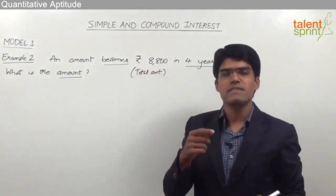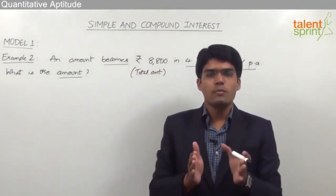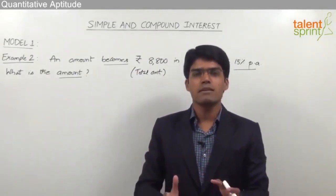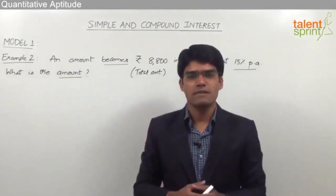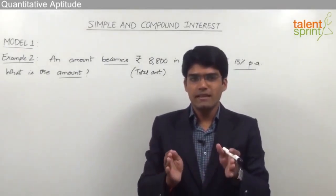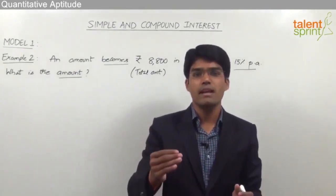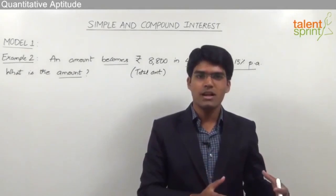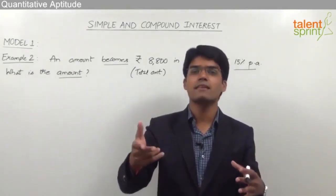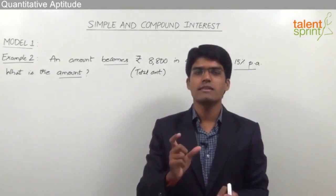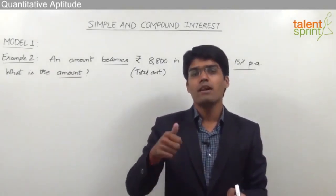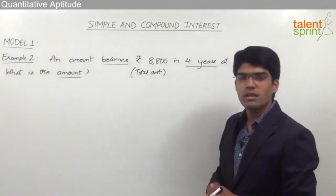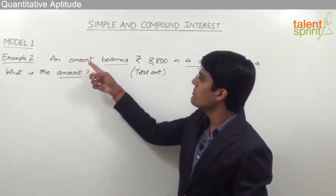This can be understood with a simple example. Let's say rupees 10,000 have been invested in a bank. This 10,000 becomes 12,000 after some time. When we say 10,000 becomes 12,000, the 12,000 is the total amount — because it includes the initial principal of 10,000 plus extra 2,000 rupees of interest.